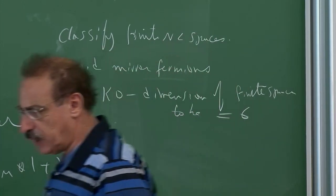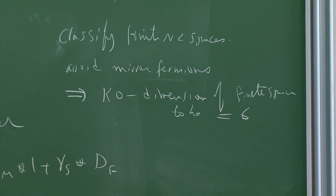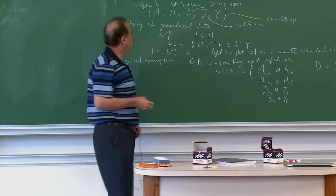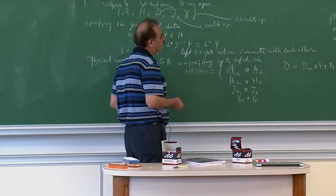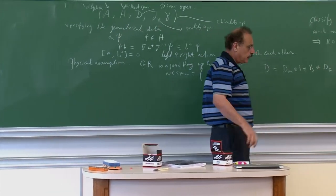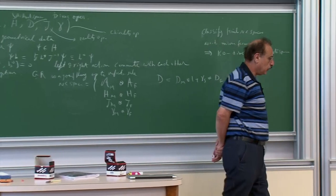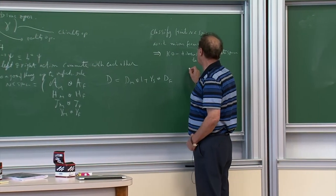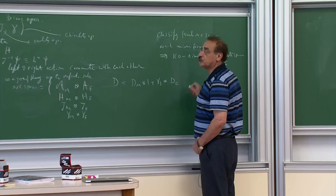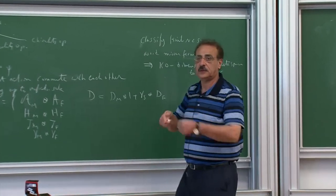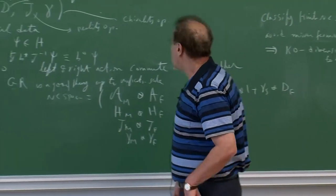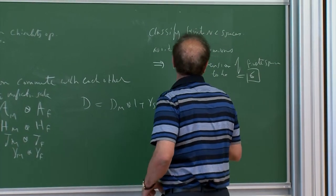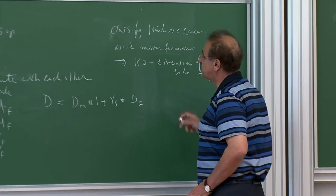We also said another requirement is that we want to avoid mirror fermions, and that really required fixing what we call the K-O dimension of the finite space to be 6. K-O dimension is not a metric dimension — it has to do with the properties of commutators of D and D-bar, specifically under which conditions you can impose Majorana and Weyl conditions separately or simultaneously.